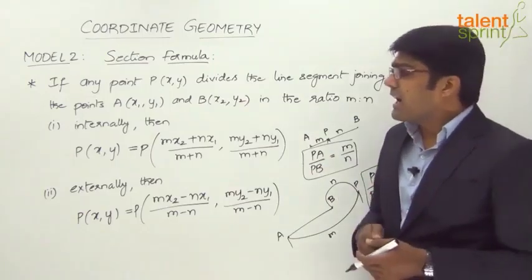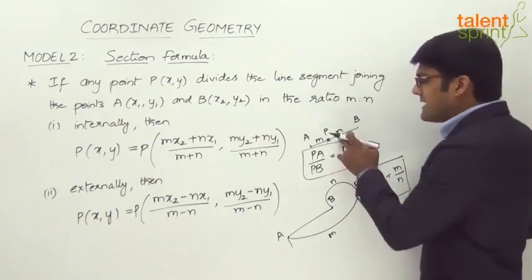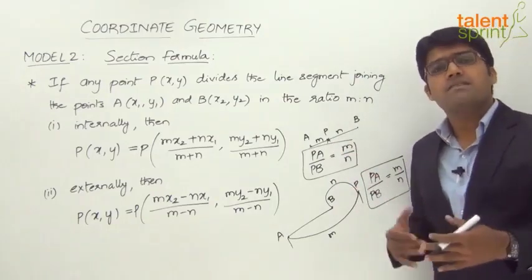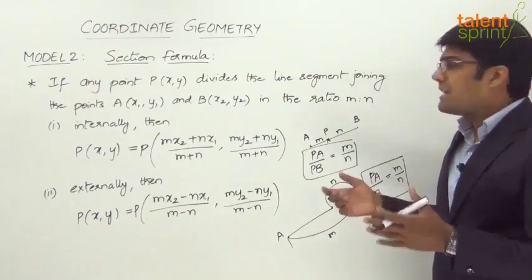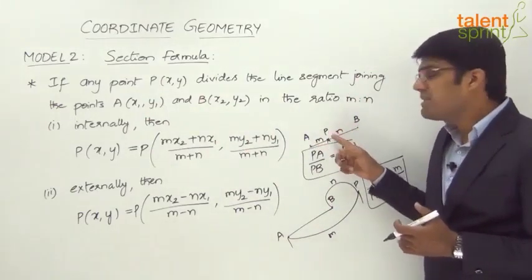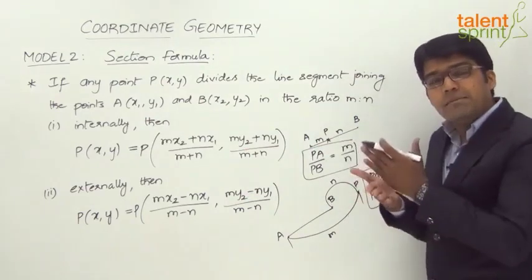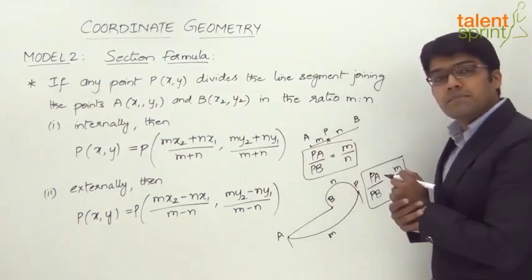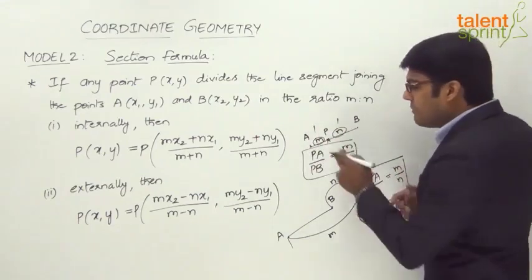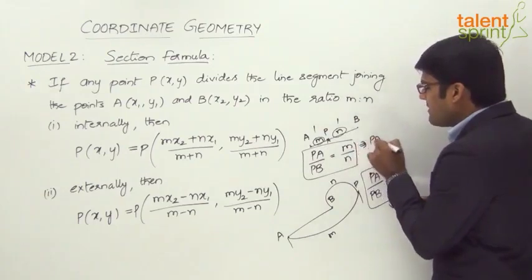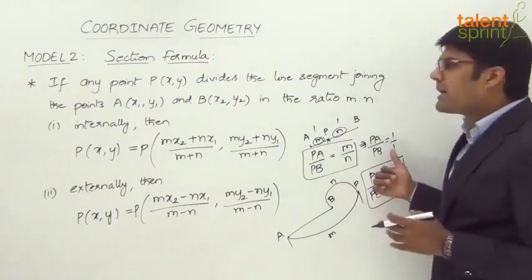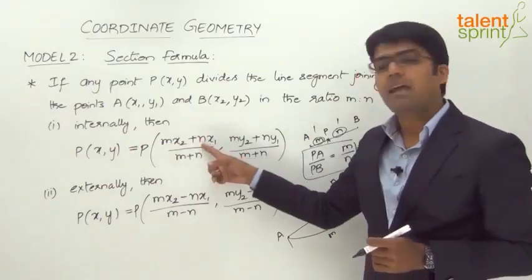Now, the other point we can understand from this statement is: let us say P divides in the ratio m is to n internally and P is the midpoint. The question says that P is the midpoint of the line segment joined by the two points A and B. So there is a line segment formed by A and B and P is the midpoint of it. If P is the midpoint, what does it mean? It falls exactly between A and B. In that case, m is to n will be equal to 1 is to 1. If it is a midpoint, PA by PB will be equal to 1 by 1.